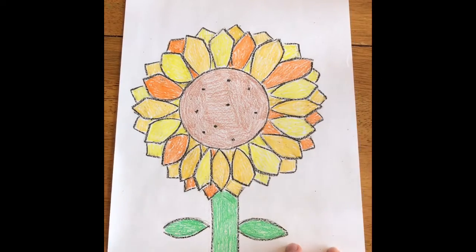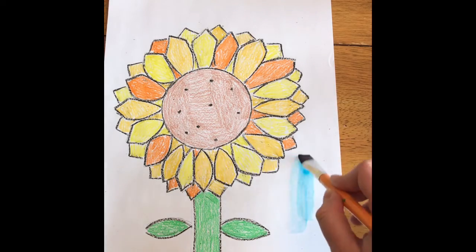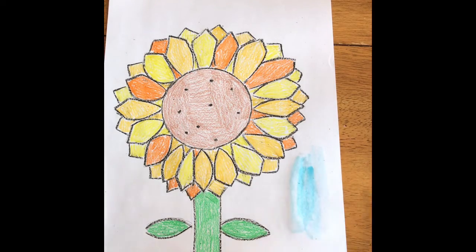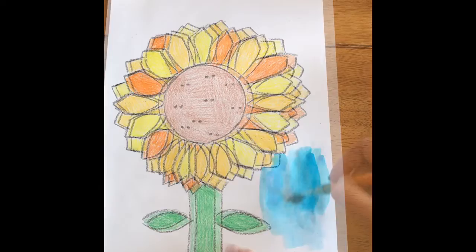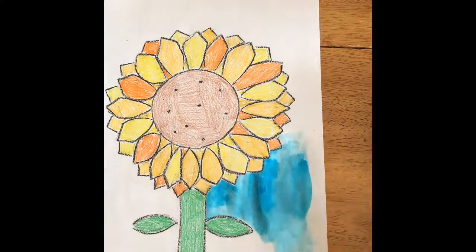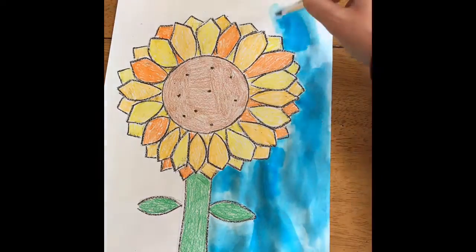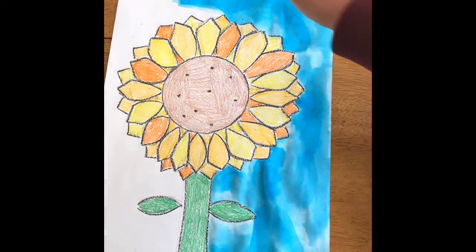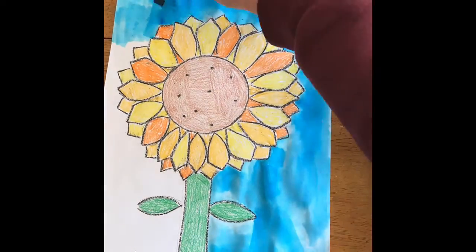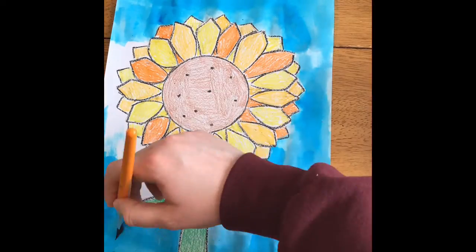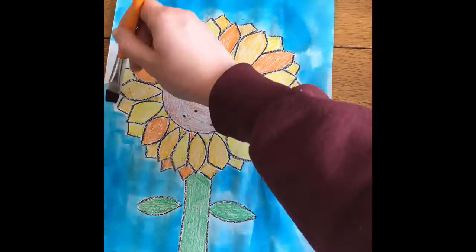Our last step is to color the background blue to make it look like our sunflower is against the sky. You could do this in watercolor if you have it, or you can just continue with crayon, or color pencil, or marker. And if you want to add clouds in the sky, you could also try that as well. Once it's done, set it aside to dry. Have fun, boys and girls.